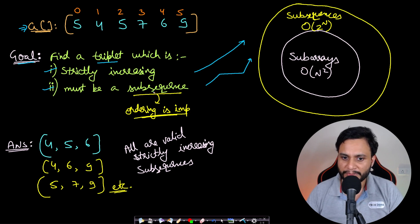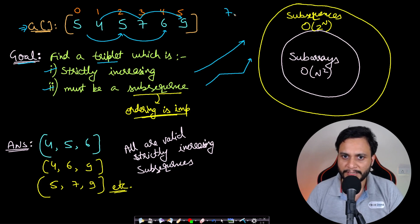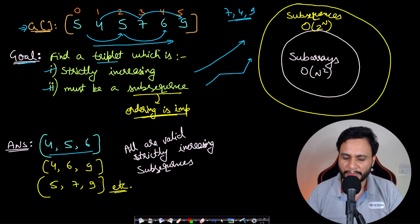The second condition is the triplet must be a subsequence. A subsequence allows you to skip any number of items in the middle, but the ordering must be maintained. For example, you can pick 4, 7, 9 — that is a valid triplet. But 7, 4, 9 is not valid because the ordering is wrong. Valid answers here include 4, 5, 6 and 4, 6, 9 and 5, 7, 9 — in all cases ordering is left to right.